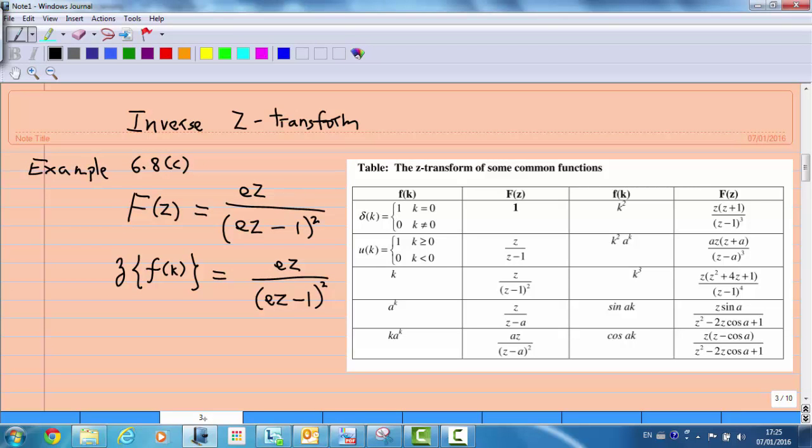From the Z-transform table, we notice that there is something similar, especially the last row. The Z-transform of k times a^k is equal to az over (z - a)².